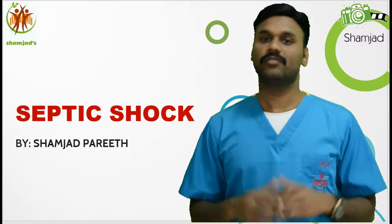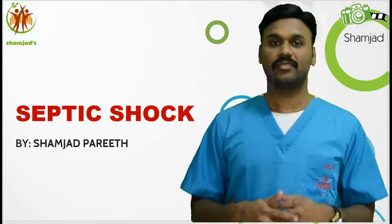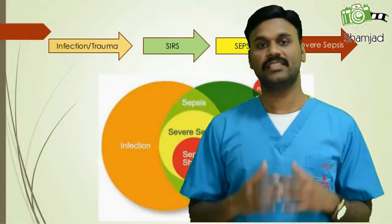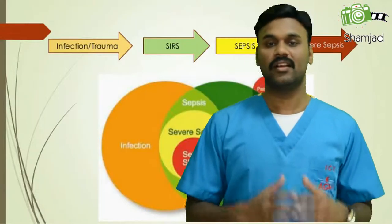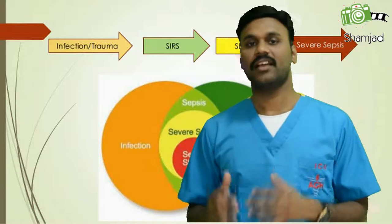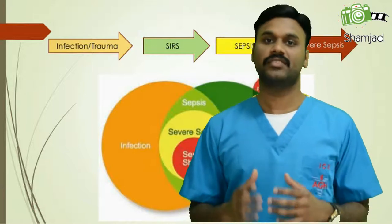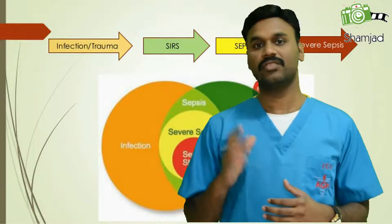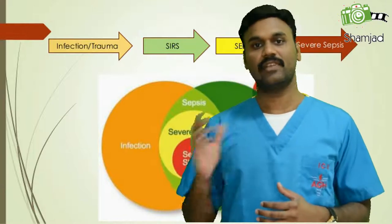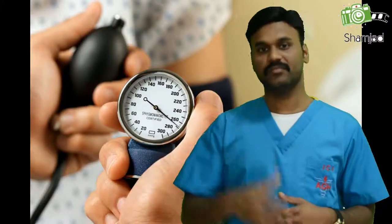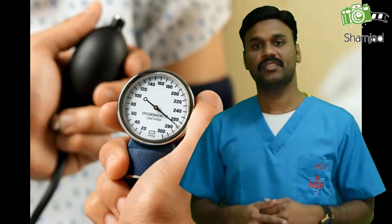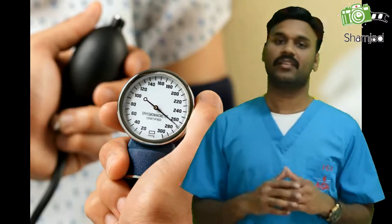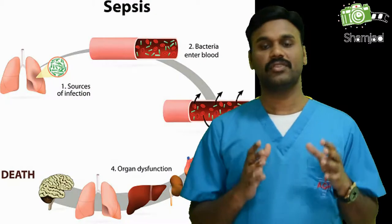Today we will spend some time on septic shock. It's a serious medical condition that occurs when sepsis leads to dangerously low blood pressure and abnormalities in cellular metabolism. Sepsis means organ injury or damage in response to infection. Because of this hypotension, tissue perfusion is reduced, causing hypoxia and organ damage.